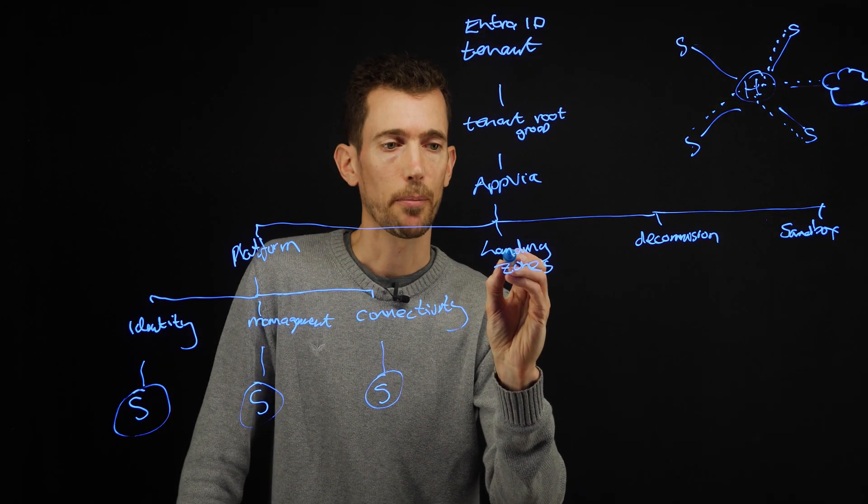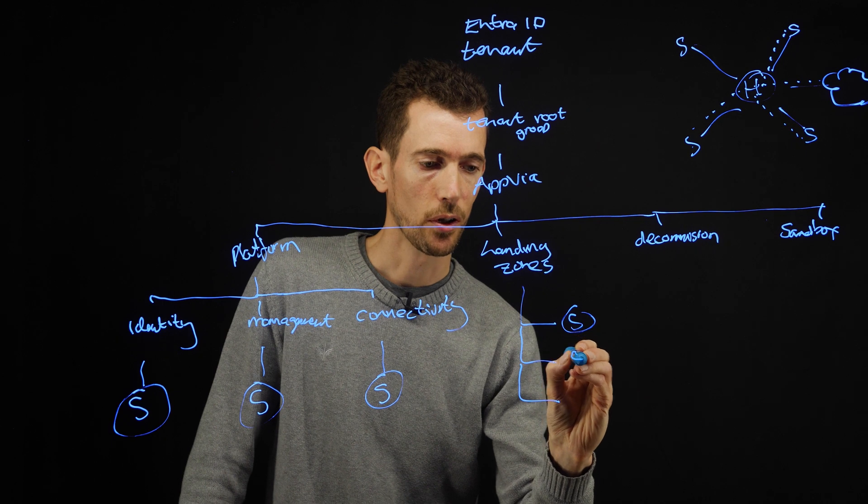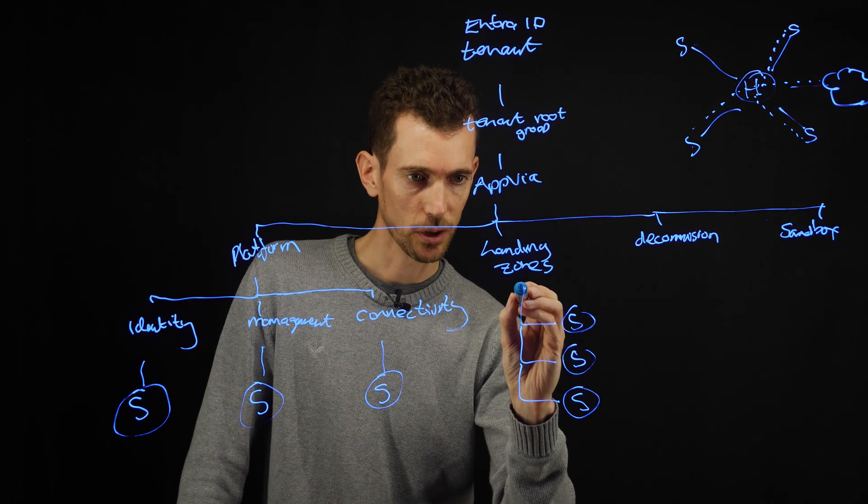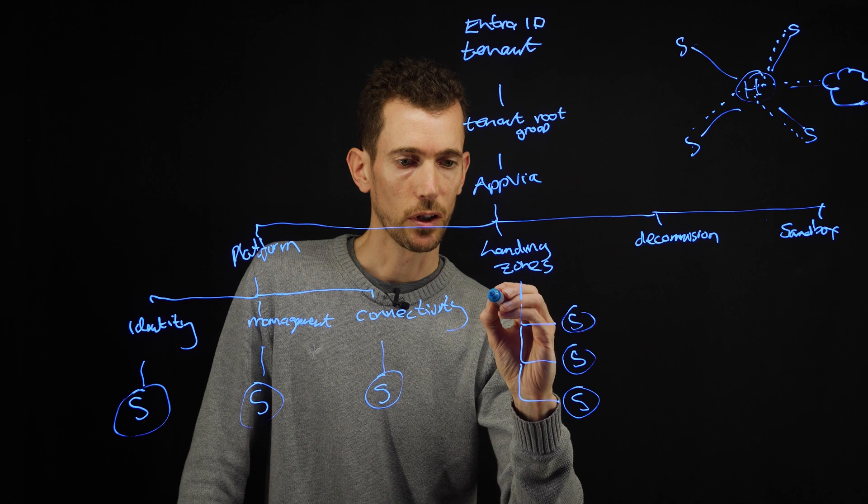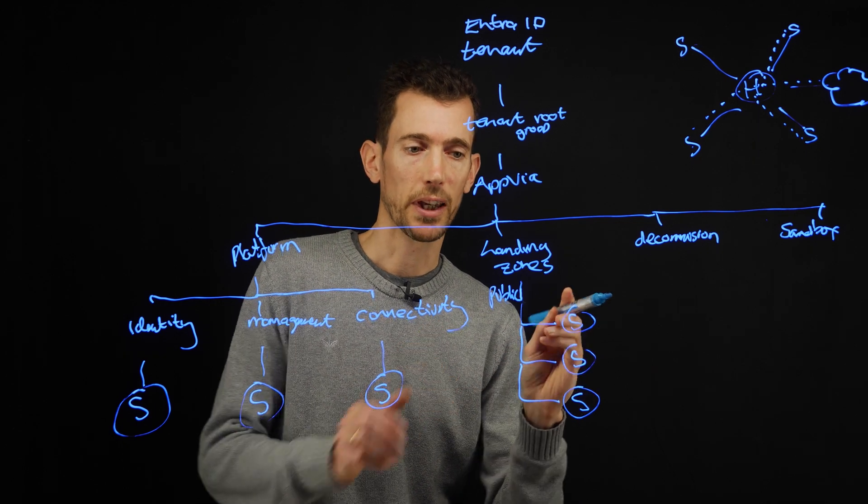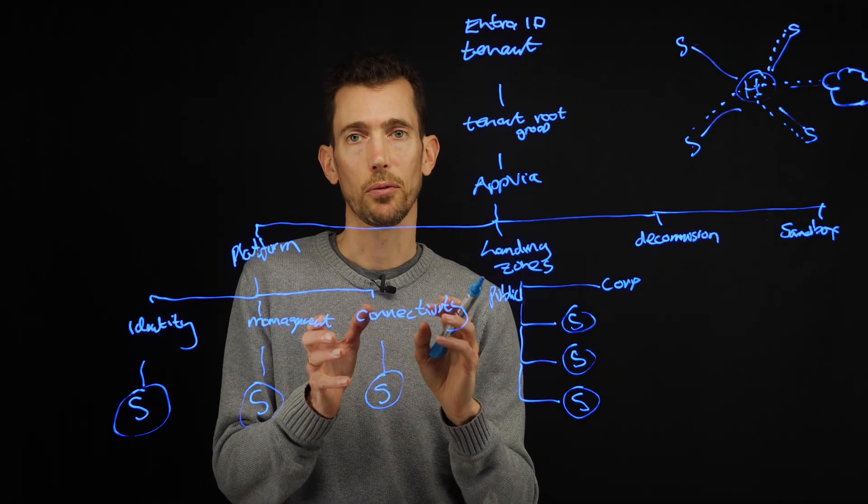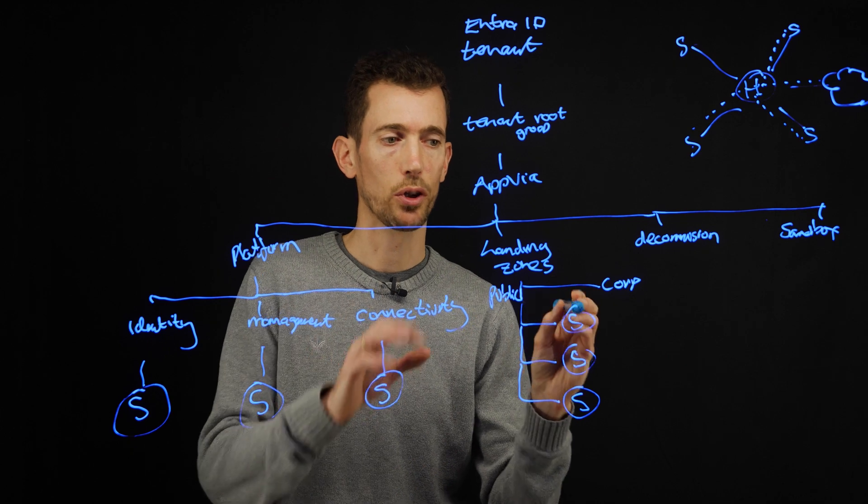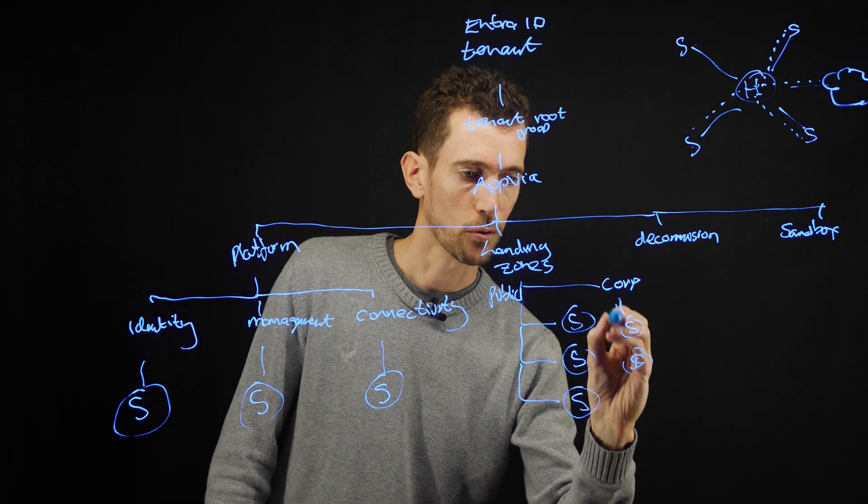So we talked a little about these application landing zones down here. So there would be lots of them, one for each of your subscriptions. But you'd also probably want to split those out and have a management group for your public facing stuff. So this might be websites or services that you're providing on the public internet. And then also you might want to have a corporate section. So this would be your internal facing platforms that aren't accessible via the internet but are accessible to your on premise, to your wider network but not exposed. So that would also have one or more subscriptions underneath there.